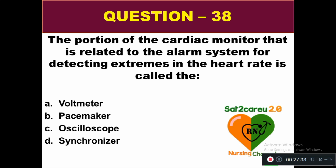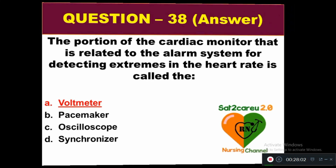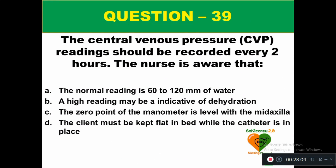Question 38: The portion of the cardiac monitor related to the alarm system for detecting extremes in heart rate is called: option A voltmeter, option B pacemaker, option C oscilloscope, option D synchronizer. The right answer is option A — voltmeter.